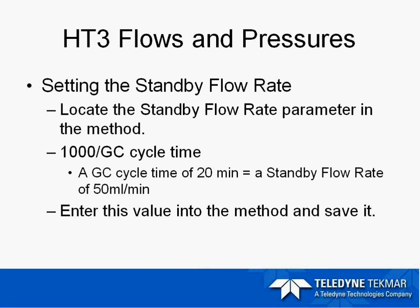Now moving on to the HT3, which is our replacement for the 7000. The HT3 comes as a static loop-only system or a dynamic option which comes with a trap. While the static unit is very similar to the 7000, the technology is slightly different in how it measures gas flows and pressures. The HT3 has a mass flow controller instead of a pressure regulator and gauges like on the 7000, giving much better control of flow and pressure. The incoming gas pressure to the HT3 must be a minimum of 65 PSI for the mass flow controller to function correctly, and it should not exceed 100 PSI.